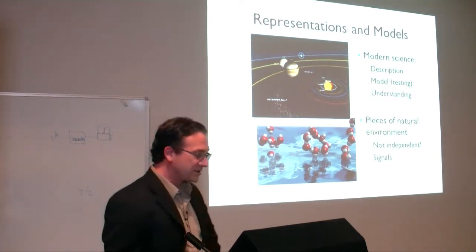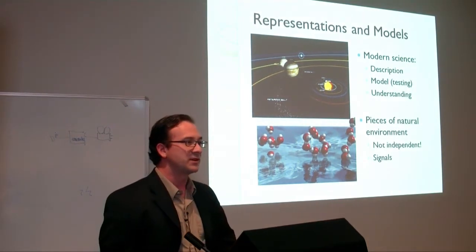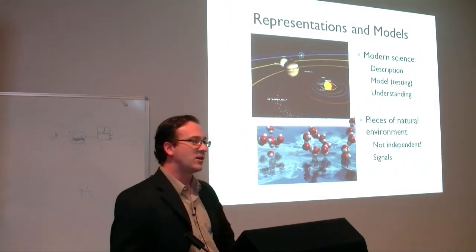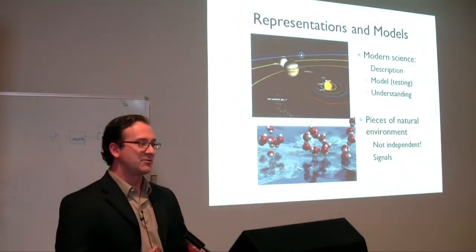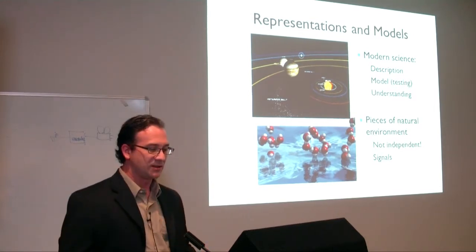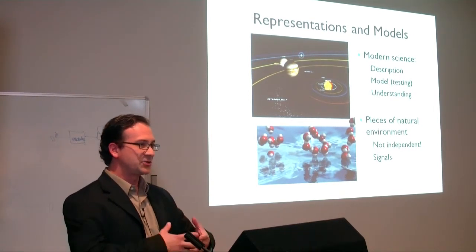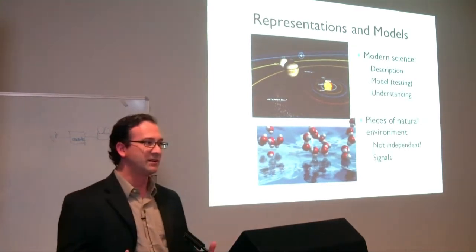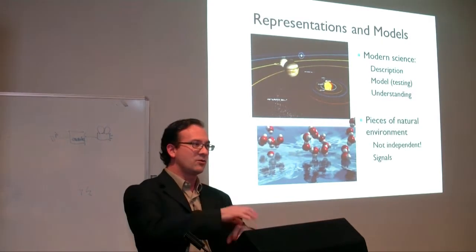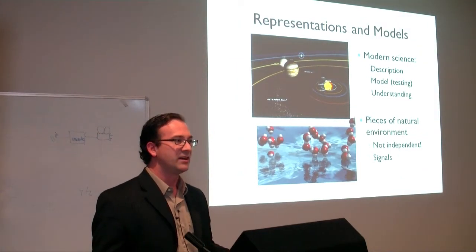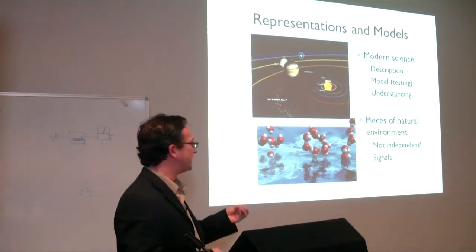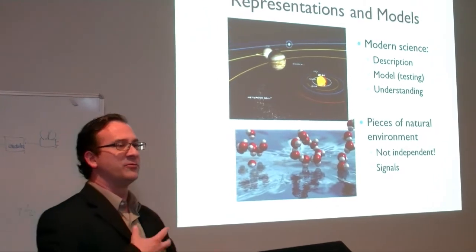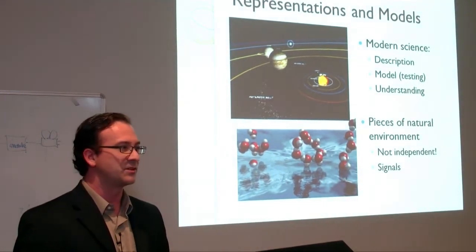Modern science rests on the principle that we understand things by representing them, describing what's going on, and building models. Building a model means coming up with a simplified representation. In nature, you can define various parts — molecules, for example — that are not independent; they affect one another. When something happens to one part, other parts react, and we describe that communication between them as signals.